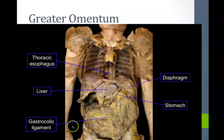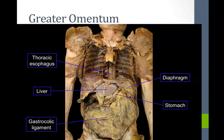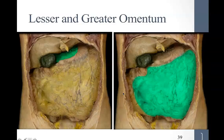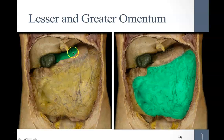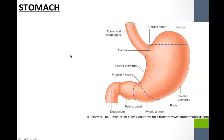If you first dissect your abdominal cavity, you would see this large sac of fat and wonder where all the intestines are. This is called your greater omentum, and it attaches to what we'll soon learn is the greater curvature of the stomach. We also have a lesser omentum, which attaches to the lesser curvature of the stomach. Most cadaveric pictures beyond this point will not have the omentum in place.